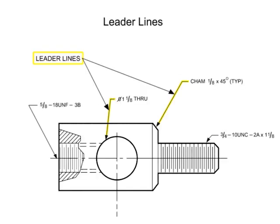Leader lines are used to indicate a part or portion to which a number, note, or other reference applies and are typically unbroken lines terminating in an arrowhead. The most common use is when a dimension won't fit within the dimension line.